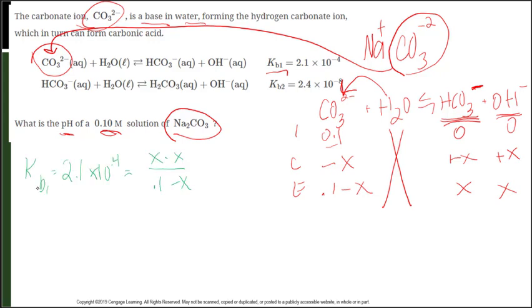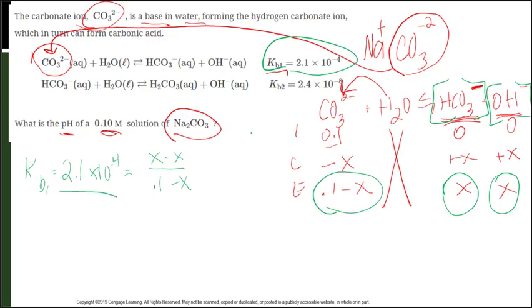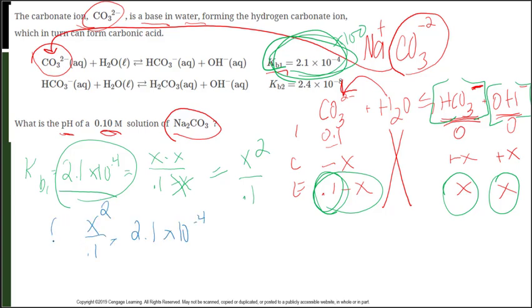Let's set up our equilibrium expression. Here is my Kb expression. I have my Kb equal to my products over reactants. And my products would be the concentration of HCO3- times the concentration of my hydroxide. So X times X over the concentration of my reactants, 0.1 minus X. Now notice that my Kb, if I took my Kb and I times that by 100, that would be 2.1 times 10 to the negative 2. It's still smaller than that initial concentration. So down here we can neglect that minus X and simplify.